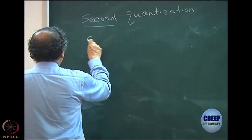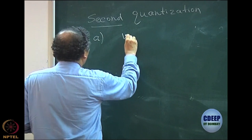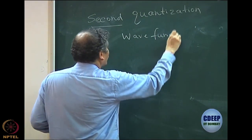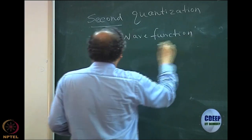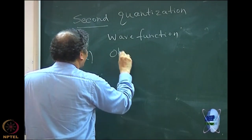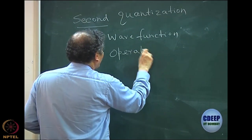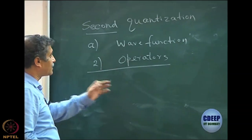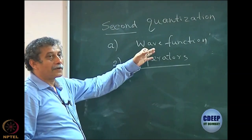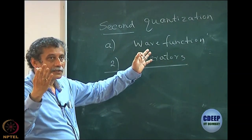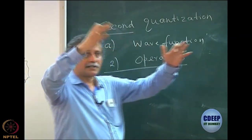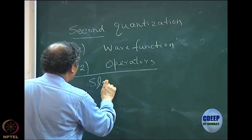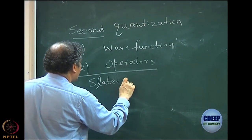The two important points are the simplification of writing the wave function and the expression of the operators. Then we will see how to write the matrix element of an operator between two wave functions — that is the Slater rule: two determinants on each side in the Hamiltonian matrix element. How does that translate in second quantization — the Slater-Condon rules?